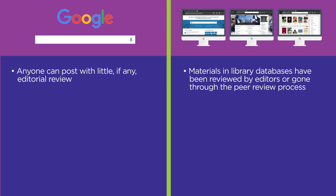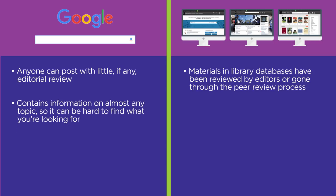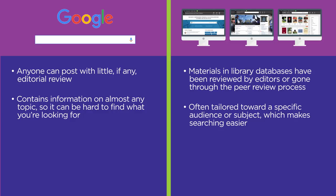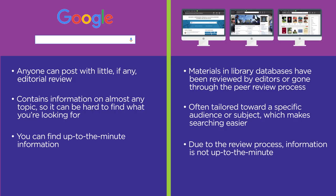This helps add credibility to the information you'll find. The internet contains information on almost any topic in the whole world, so sometimes it can be hard to find exactly what you're looking for. Library databases are often tailored toward a specific audience or they deal with a specific subject, and this can make searching easier. On the internet you can find up-to-the-minute information since there's often no formal review process for posting. Because library databases only add materials that have undergone the formal review process, they do not contain up-to-the-minute information.